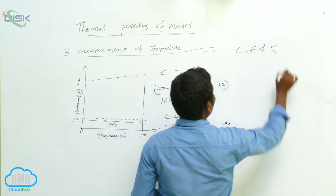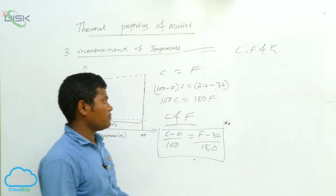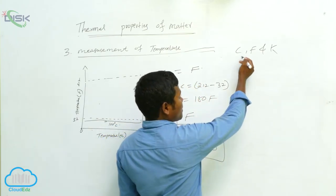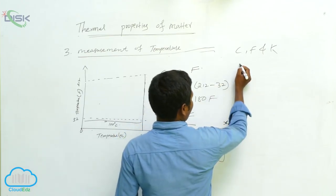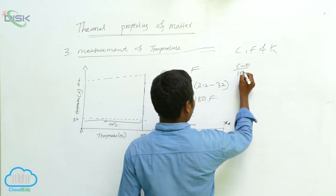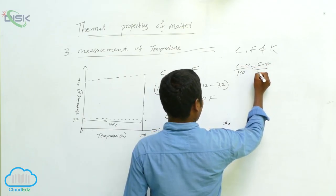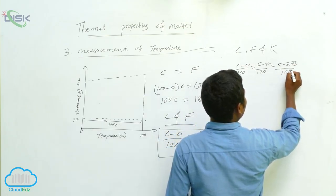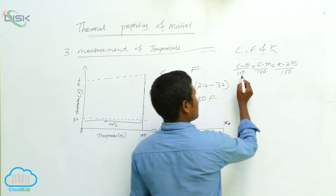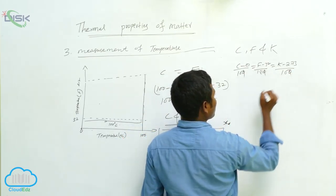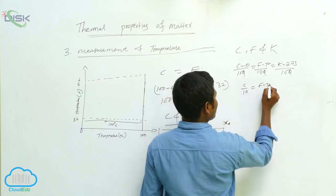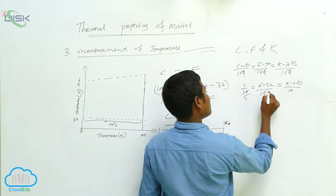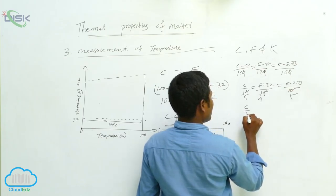There are three measurements for temperature: degree Celsius, Fahrenheit, and Kelvin. The relation among all three can be written as: C / 100 = (F - 32) / 180 = (K - 273) / 100. Sometimes you may get a question based on two of these, or sometimes based on all three.